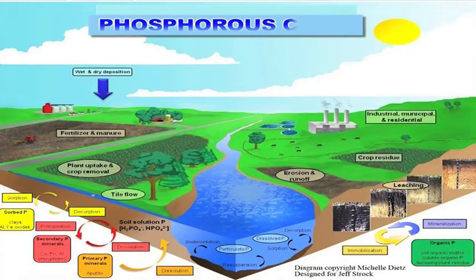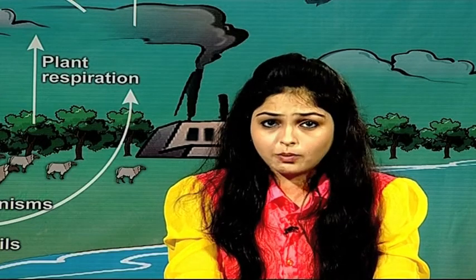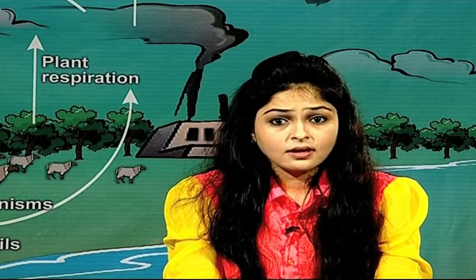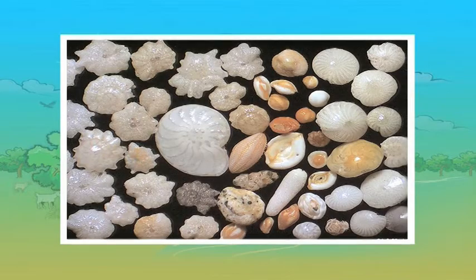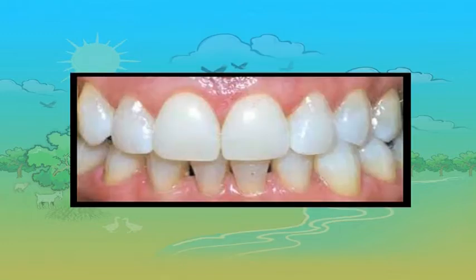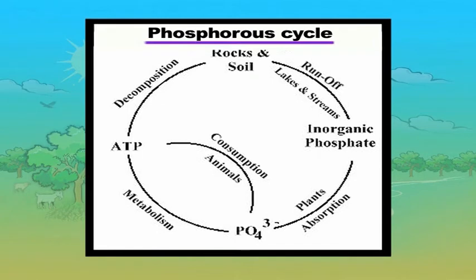Now we will be studying the second cycle, that is the phosphorus cycle. Phosphorus is a major constituent of life-sustaining biomolecules, biological membranes, energy-rich compounds such as ATP and nucleic acids. In addition, many animals also need large quantities of phosphorus to make shells, bones, exoskeleton and teeth. It also functions as a buffering agent in maintaining acid-base homeostasis in the human body. The phosphorus cycle describes the movement of phosphorus through the lithosphere, hydrosphere and biosphere.